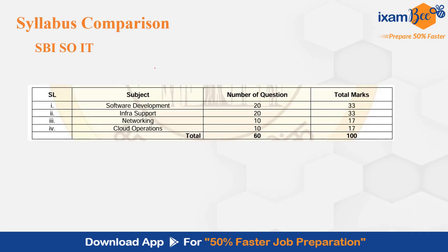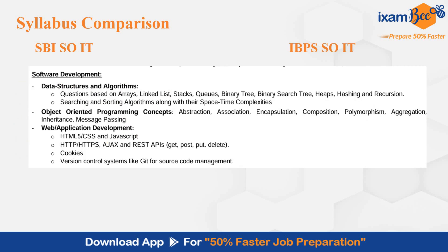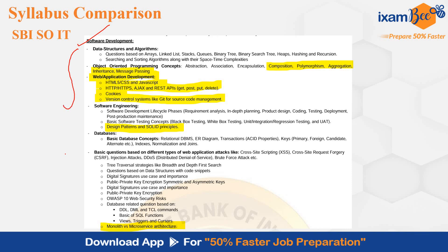When you look at SBI SOIT, the IT part is divided into 4 subjects and a syllabus is given for every subject. These are all the topics that have to be studied in software development: data structures and algorithms, OOPs concepts, web application development, software engineering, databases, and basic questions based on different types of web application attacks and various other topics.